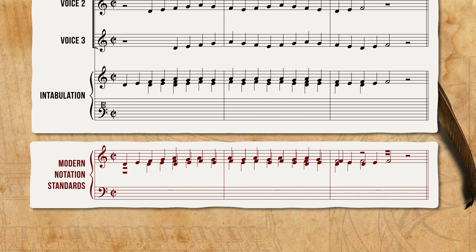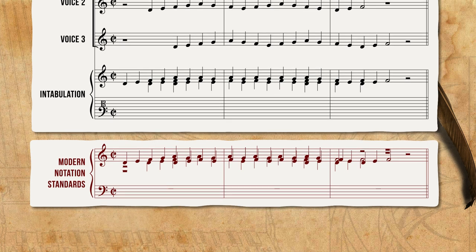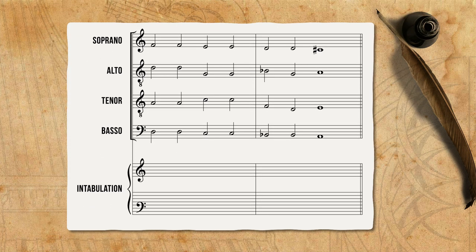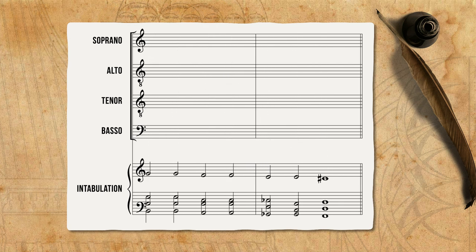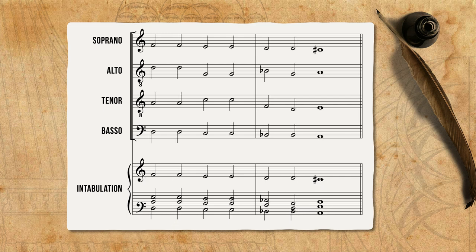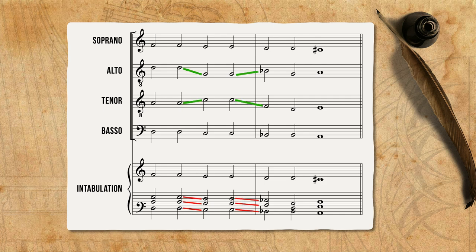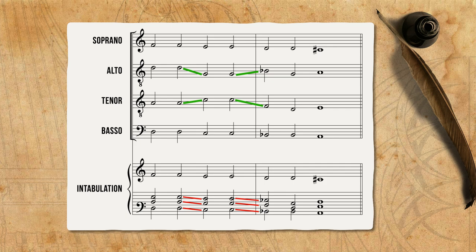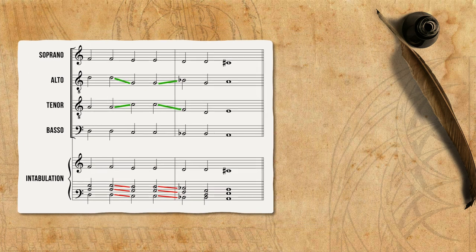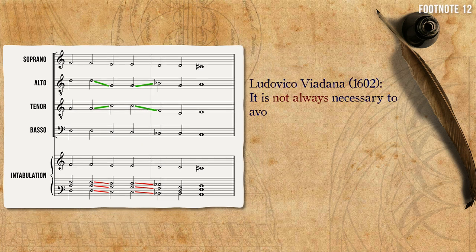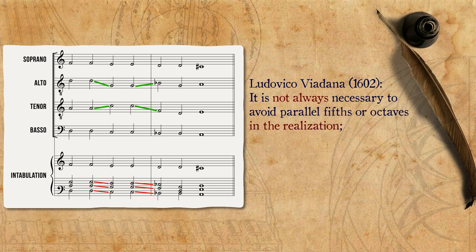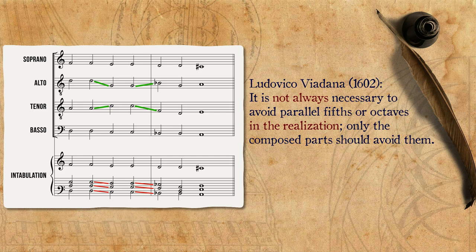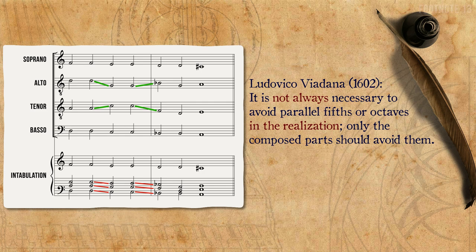This is not to say that one system is better than another — it is more to demonstrate the challenges of arranging Renaissance polyphony for a single instrument. In this example, you can see how a perfectly correct contrapuntal progression might seem wrong when intabulated. The original and correct voice leading is obscured, and we are left with what seems like blatant parallel octaves and fifths. In one of the earliest instructions for realizing basso continuo, Ludovico Viadana writes that it is not always necessary to avoid parallel fifths or octaves in their realization — only the composed parts should avoid them.